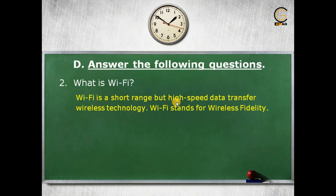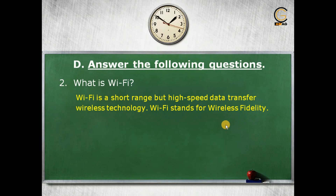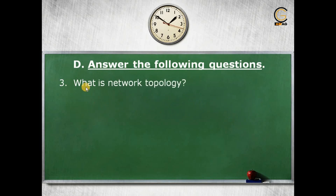Next question: what is Wi-Fi? Wi-Fi is a short range but high speed data transfer wireless technology. In Wi-Fi we can transfer our data at a very high speed. Wi-Fi also stands for wireless fidelity, so the full form of Wi-Fi is wireless fidelity.